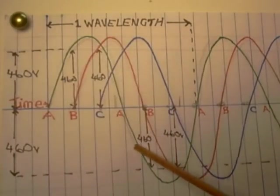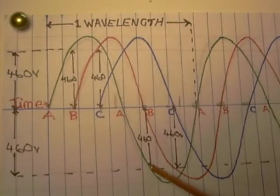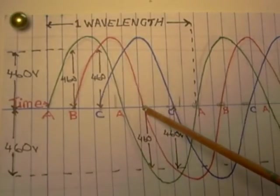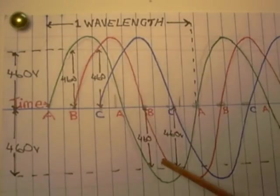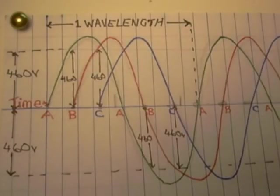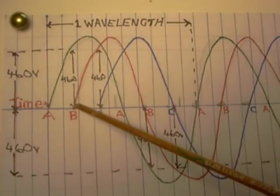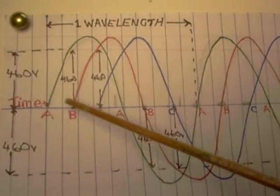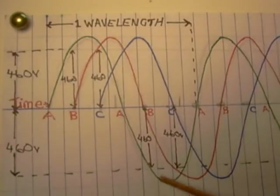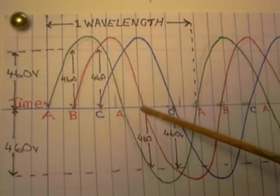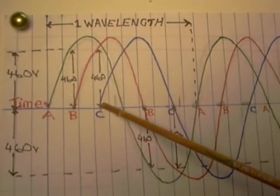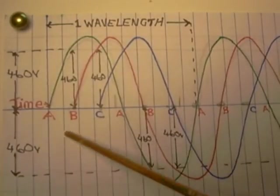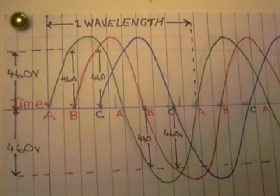Then, when phase A gets to 460 volts negative, phase B is at zero again. So you get 460 volts potential between those two conductors. So this is how this all works. If these three phases all went up all at the same time and down at the same time, there would be no potential and you would get no voltage. That's why there is a time lag between each phase as the alternator turns in the magnetic field.